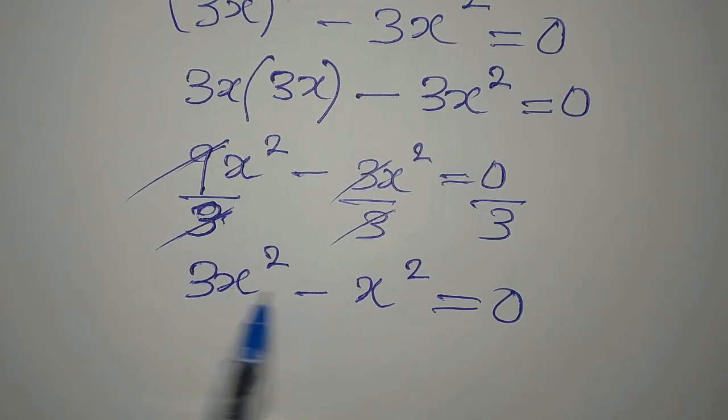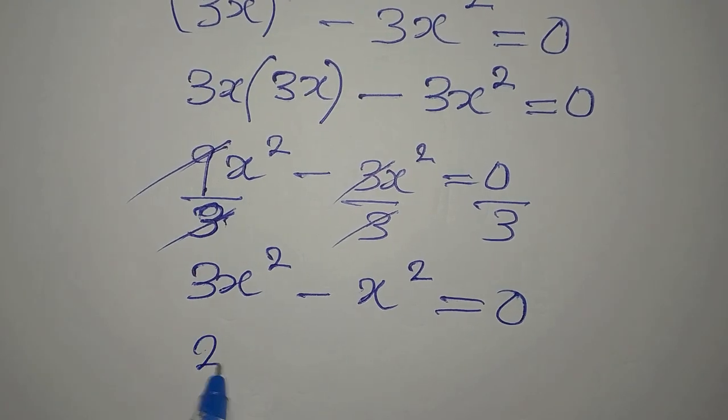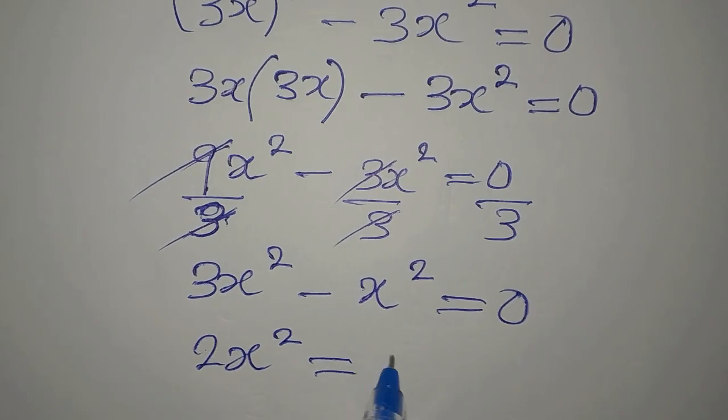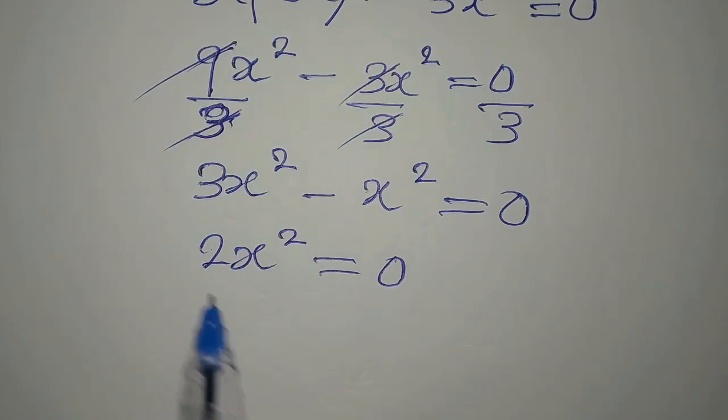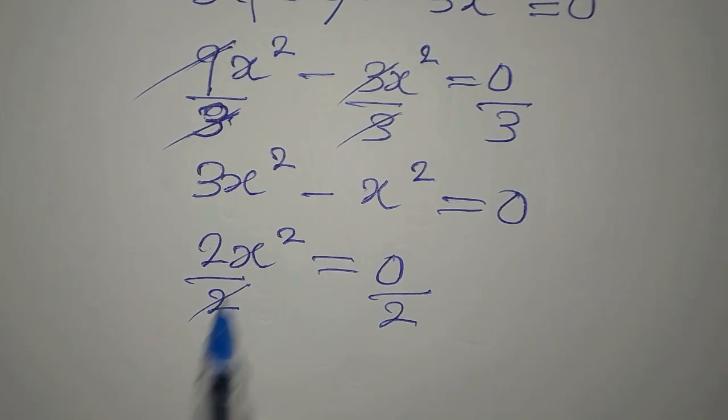Now the next target is, okay, these are the same thing. 3x² minus x² will give us 2x², and that means that we have zero there. First you divide by 2, divide this by 2 so that this will go with this.